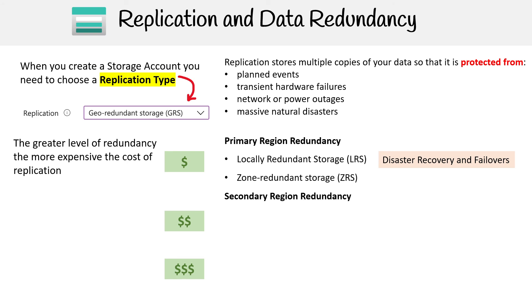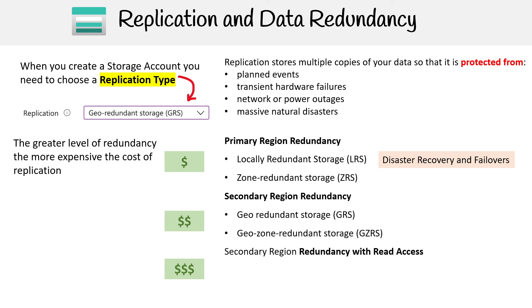For secondary region redundancy, we have geo-redundant storage (GRS) and geo-zone redundant storage (GZRS). The reason you'd want to use this tier is also for disaster recovery and failovers, but it has a higher level of redundancy.